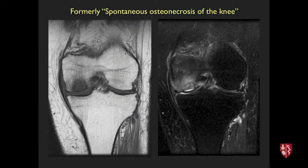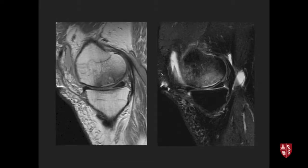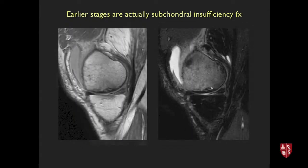Near the knee, what was historically called SONK — spontaneous osteonecrosis of the knee — shows edema in a femoral condyle with fluid beneath the cartilage and subchondral collapse. Biopsy may reveal avascular necrosis-like dead bone. For many years this was thought to be a spontaneous AVN-type entity, until it was recognized as the sequela of a subchondral stress or insufficiency fracture that was not treated appropriately.